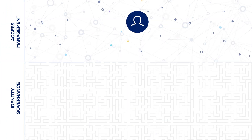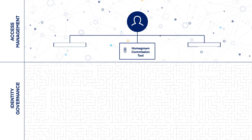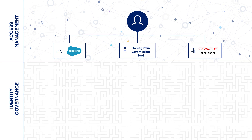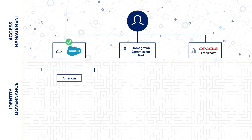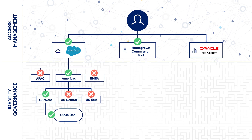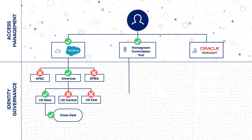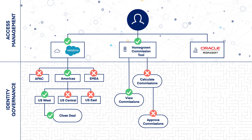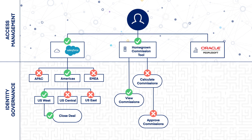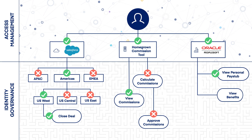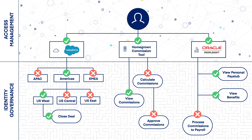For example, SailPoint's governance platform looks at an employee's role and location, then controls what he can do within an application, from viewing the company pipeline to closing a deal. We ensure that when that same employee has access to the commission tool, he sees commission but cannot calculate or approve his own commission. That same employee should be able to view his salary and benefits information in the HR application but not be able to process his commissions to payroll.